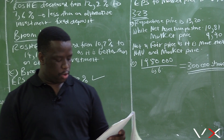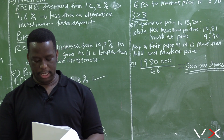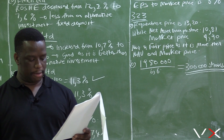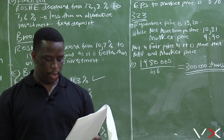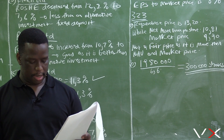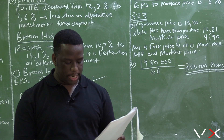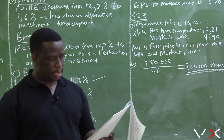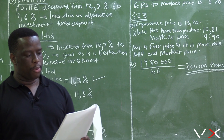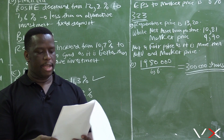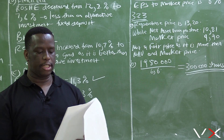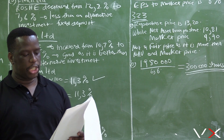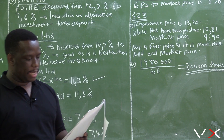Now let's look at the shareholding of Bob Yates in both companies — that is question 3.2.3C. Flexi Ltd 2020: 433,500 shares. Flexi Ltd 2021: 283,500 shares. Broom Ltd 2020: 460,000 shares at 41.8%. The question asks us to explain the effect of the share repurchase on the percentage shareholding of Bob Yates in each company.